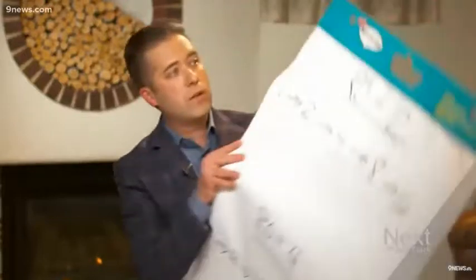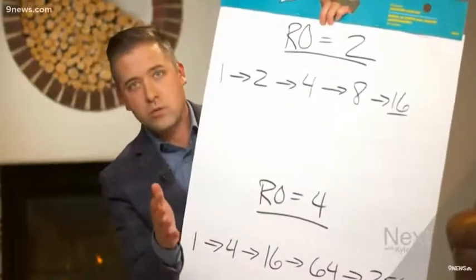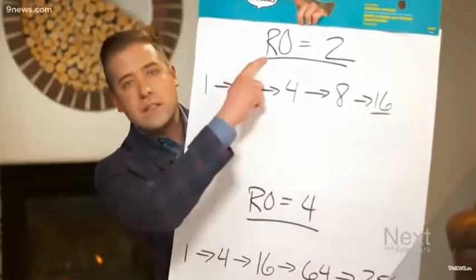But there is one piece of important context that I think we should spend some time going through once more. Forgive the homemade graphic. So the state's projections from CU researchers are heavily dependent on something we've talked about, the R-naught.